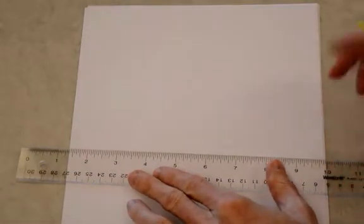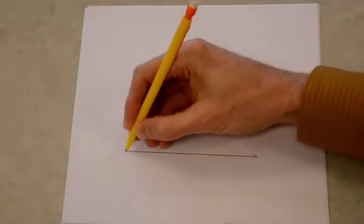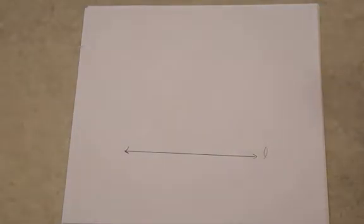I'm going to show you how to construct a line perpendicular to a given line. So first we need a line to start with, just using my straight edge to draw that line. We'll call it line L.